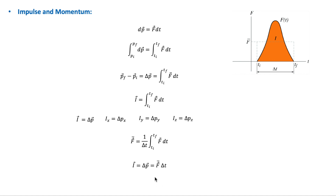In the case of collisions between two objects, the variation of the impulsive force that each body exerts on the other during the collision time is of a characteristic form: usually very large and acting during a very short time interval.